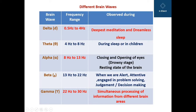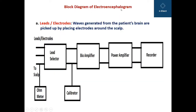This is how the different brain waves are differentiated. Moving on to the block diagram of the electroencephalogram, here you can see the leads or electrodes which are connected directly to the lead selector, followed by the bioamplifier, then the power amplifier, and then the recorder which is the displaying device. The waves generated from the patient's brain are picked up by placing electrodes around the scalp, and the signals are brought to the lead selector circuit.